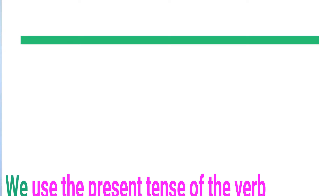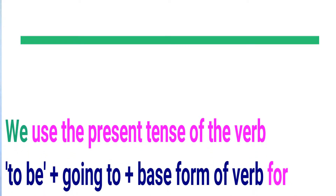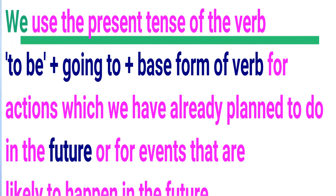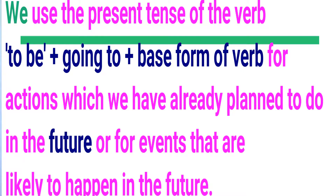We use the present tense of the verb 'to be' plus 'going to' plus the base form of the verb for actions which we have already planned to do in the future, or for events that are likely to happen in the future.